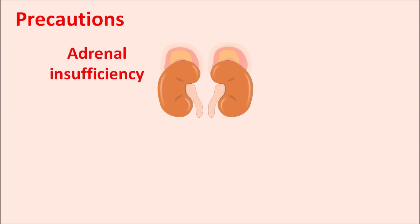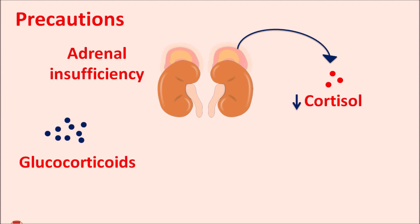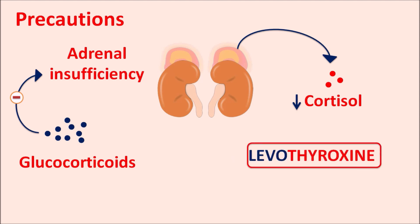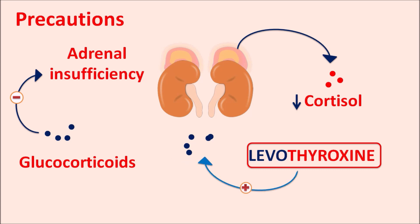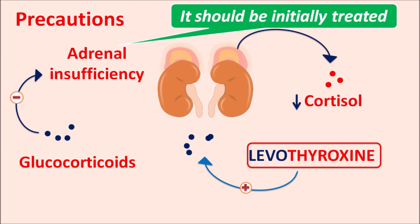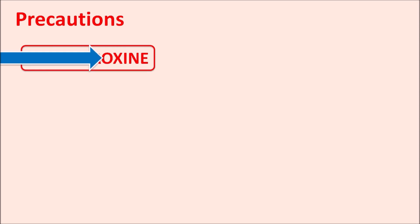In patients with adrenal insufficiency, decreased adrenal gland function results in reduced cortisol levels. Glucocorticoids are used to manage this condition, but when given along with levothyroxine, levothyroxine promotes excretion of glucocorticoids through the renal system, reducing their activity. Therefore, in patients with adrenal insufficiency, glucocorticoid therapy should be initiated before starting levothyroxine.